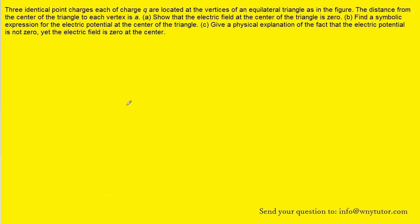And then for part C, in order to explain that the electric potential is not zero, even though the electric field is zero, we kind of almost explained it already. Remember, the electric field is a vector quantity. So when vectors are arranged in the appropriate manner, as they were in this problem, the net resultant vector can oftentimes equal zero because the directions cancel each other out.